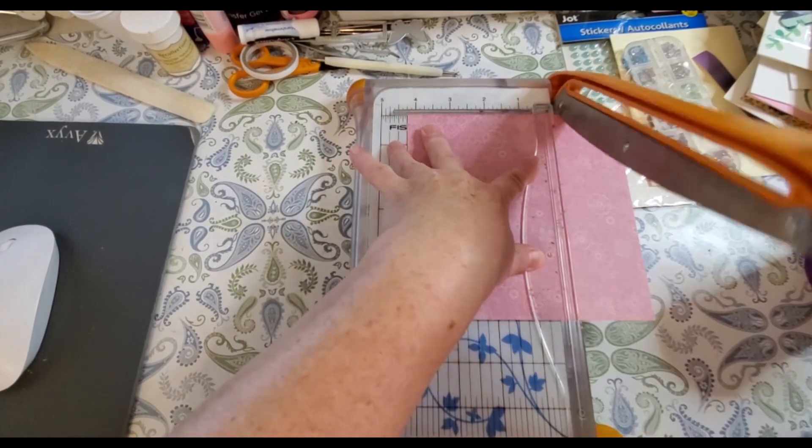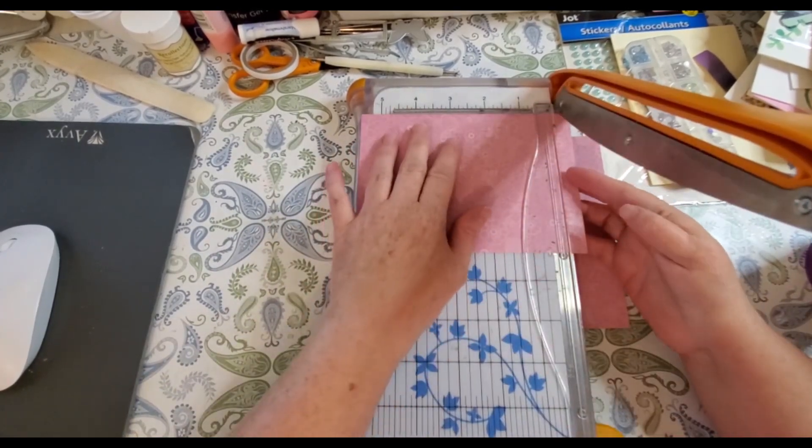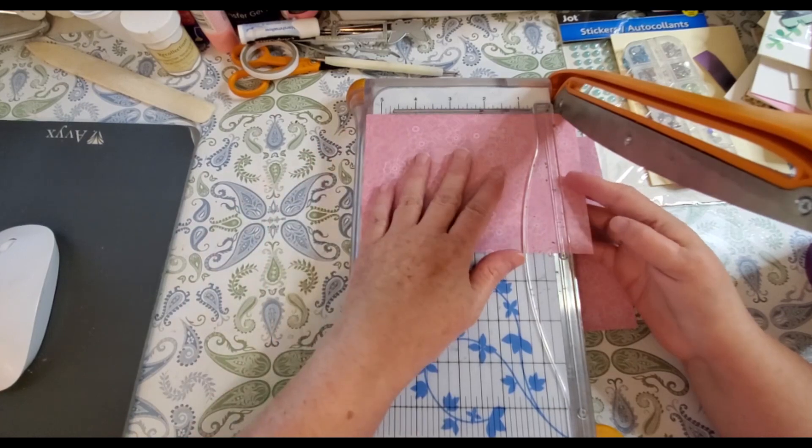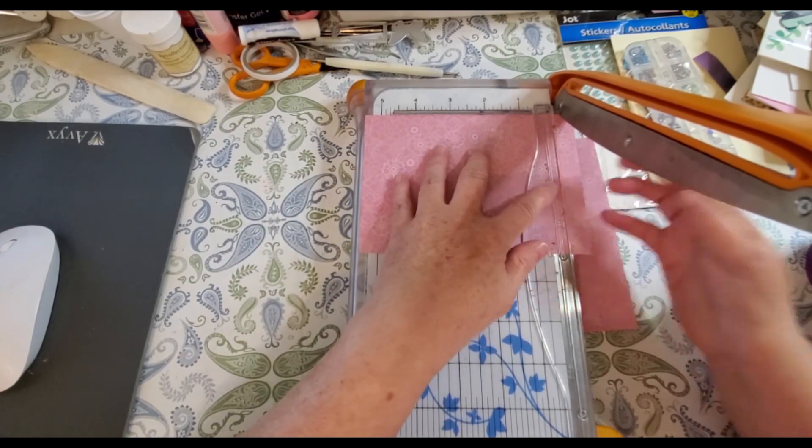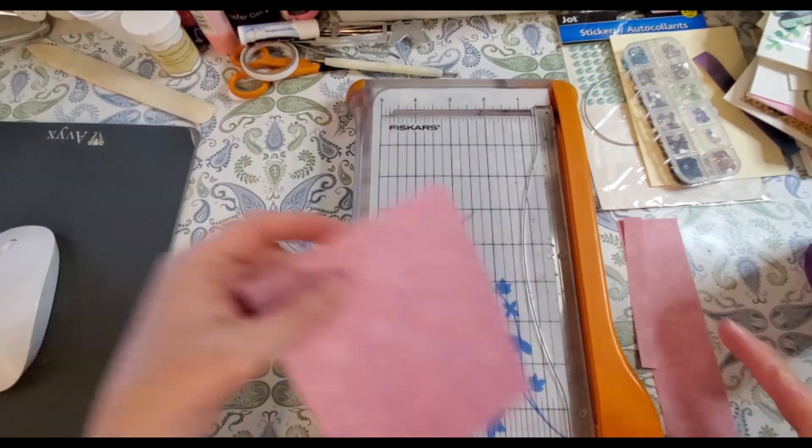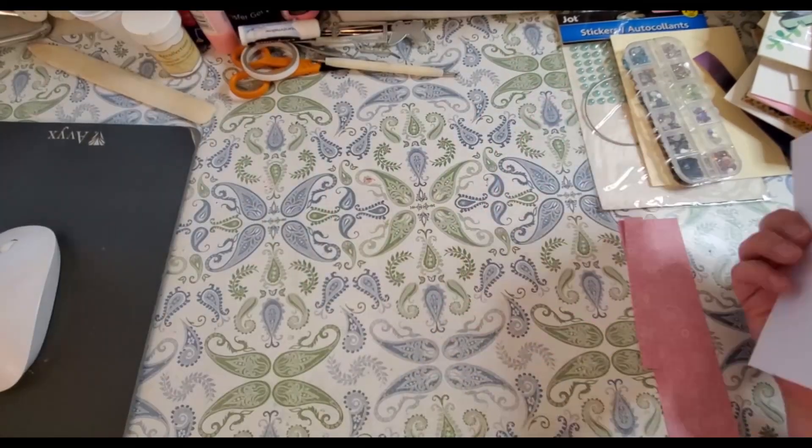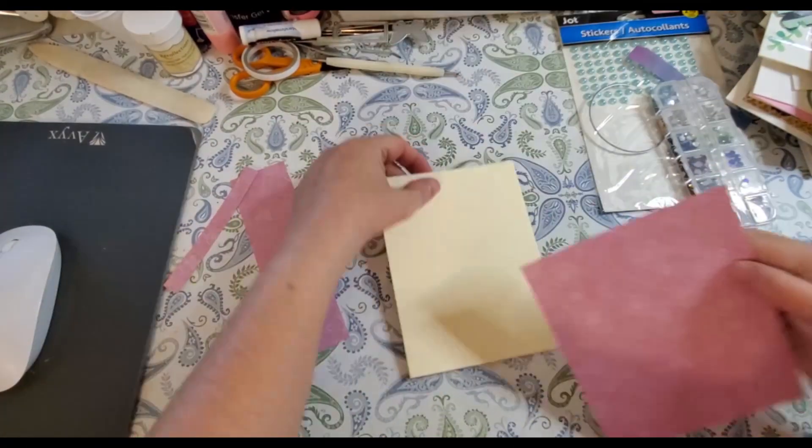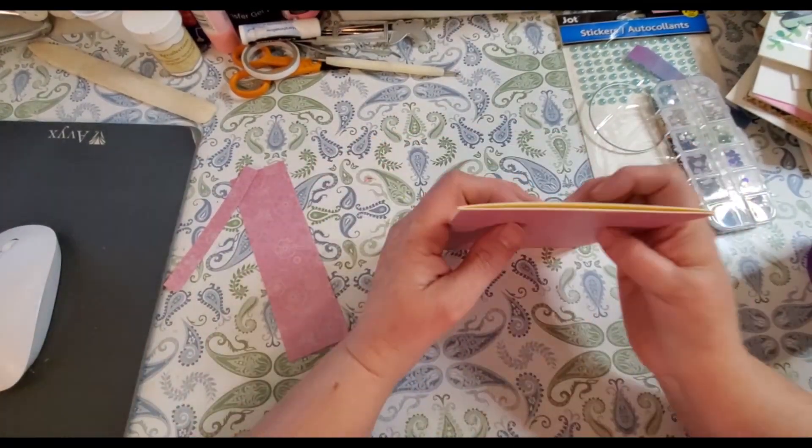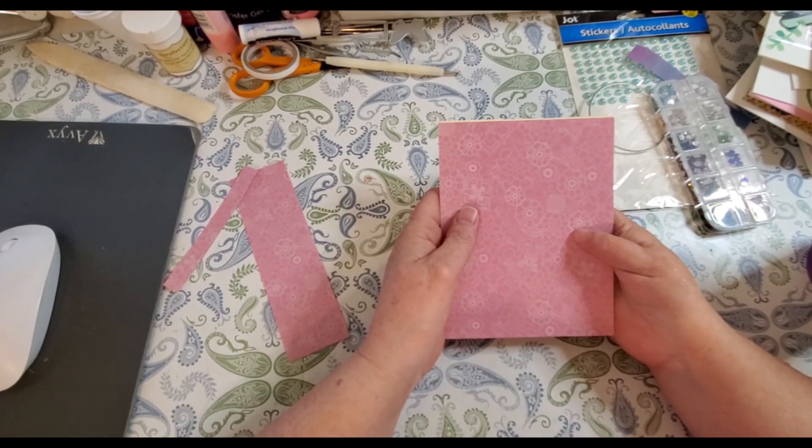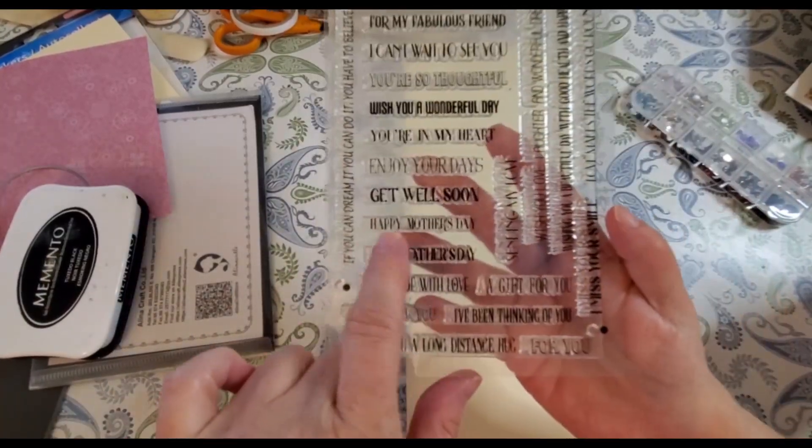I'm using Recollections pattern paper. It doesn't have a name. I'm cutting this to four and a quarter by five and a half because I wanted to go over the entire front of my cardstock. I had almost decided to make this into a gatefold, but then I changed my mind.